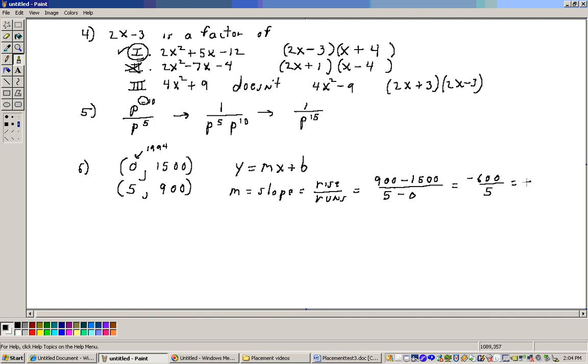Dividing those, you get minus $120. So the slope of this line is minus $120. In other words, it's depreciating $120 every year. Now look, when I subtract here $900 minus $1,500, make sure you do five minus zero, not zero minus five. You got to subtract in the same order.